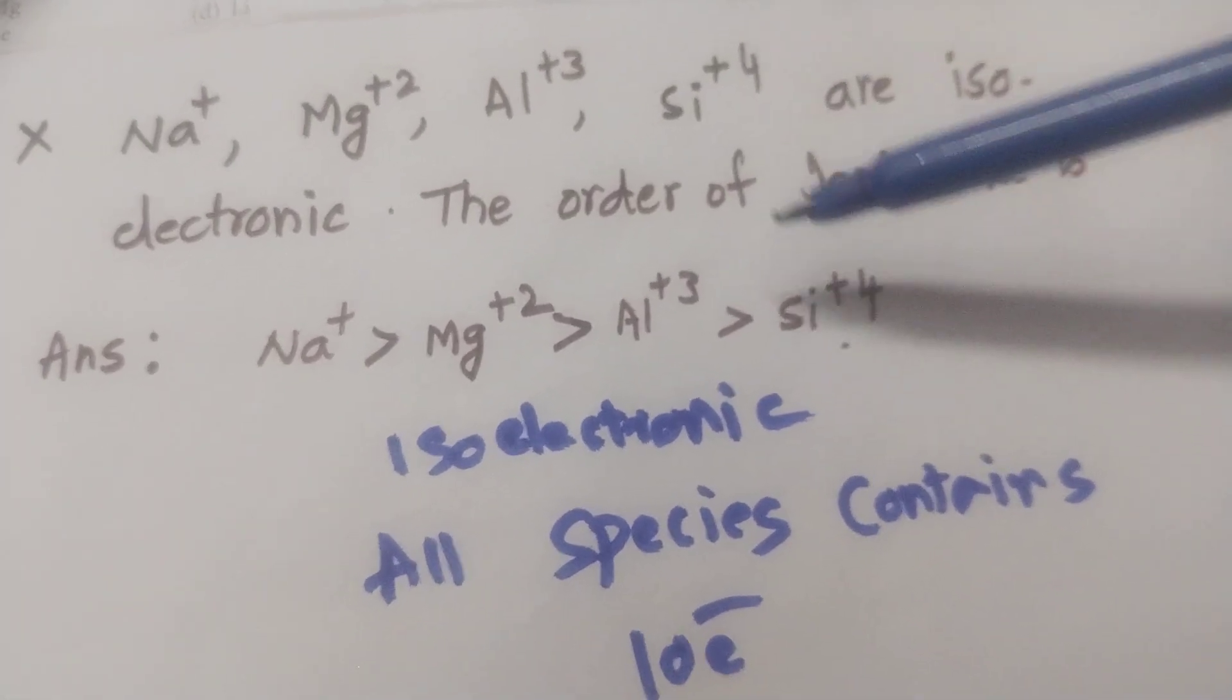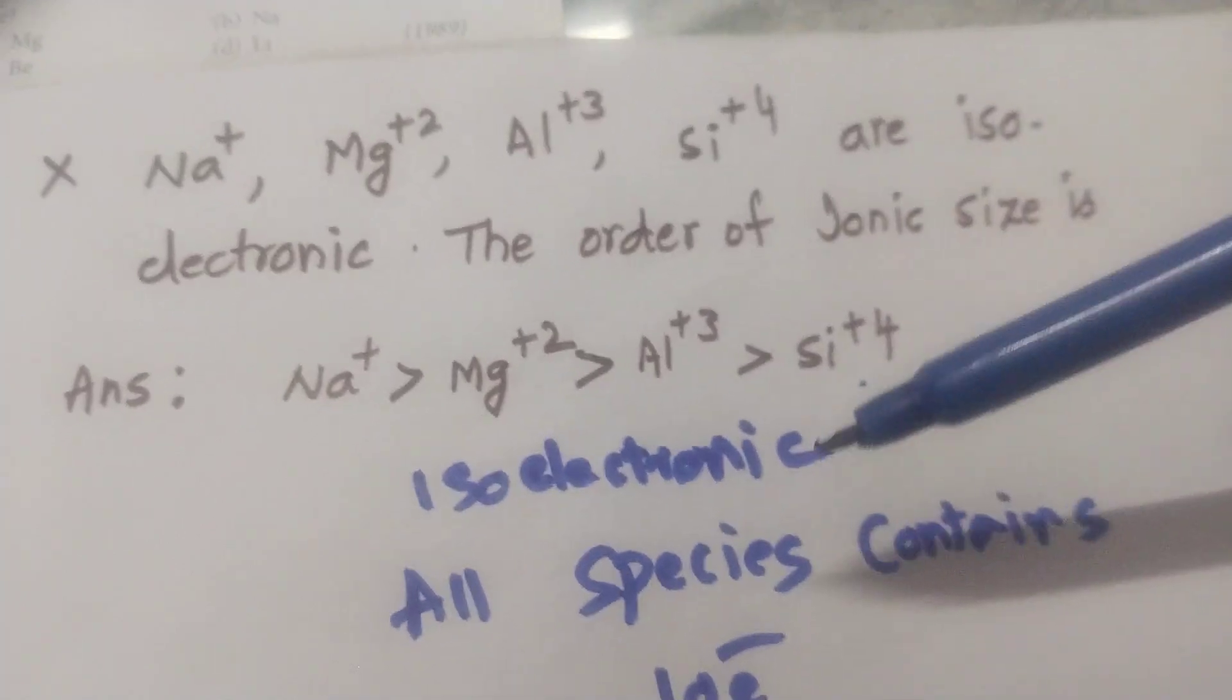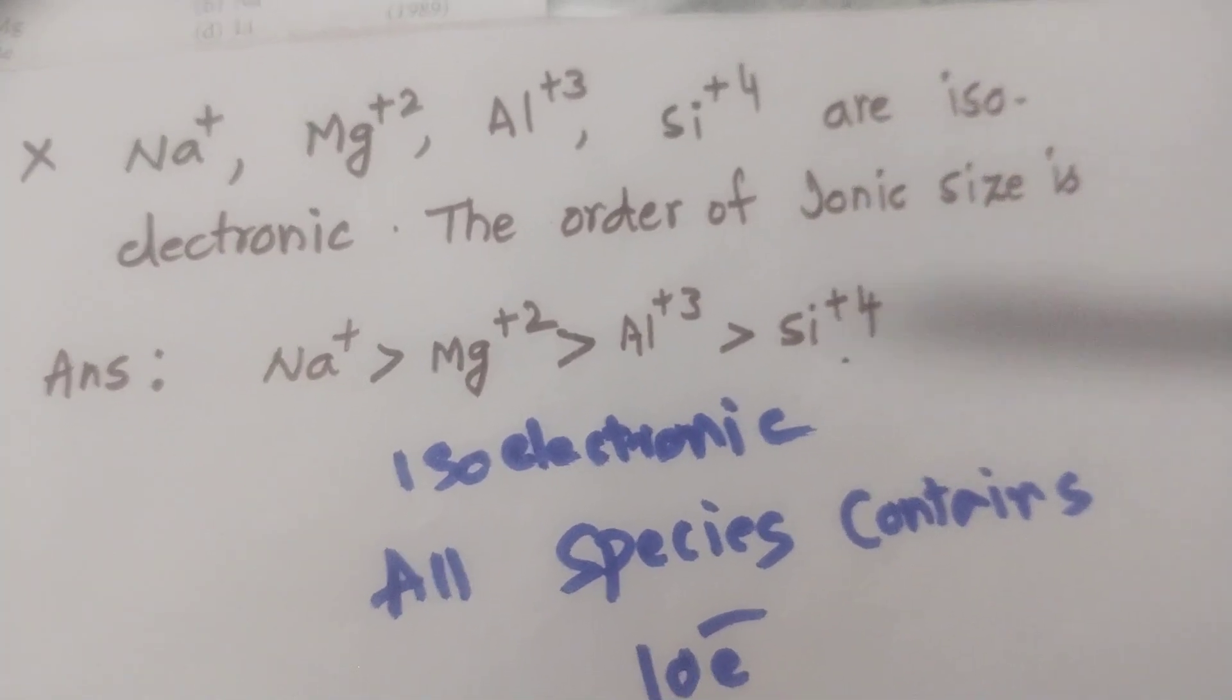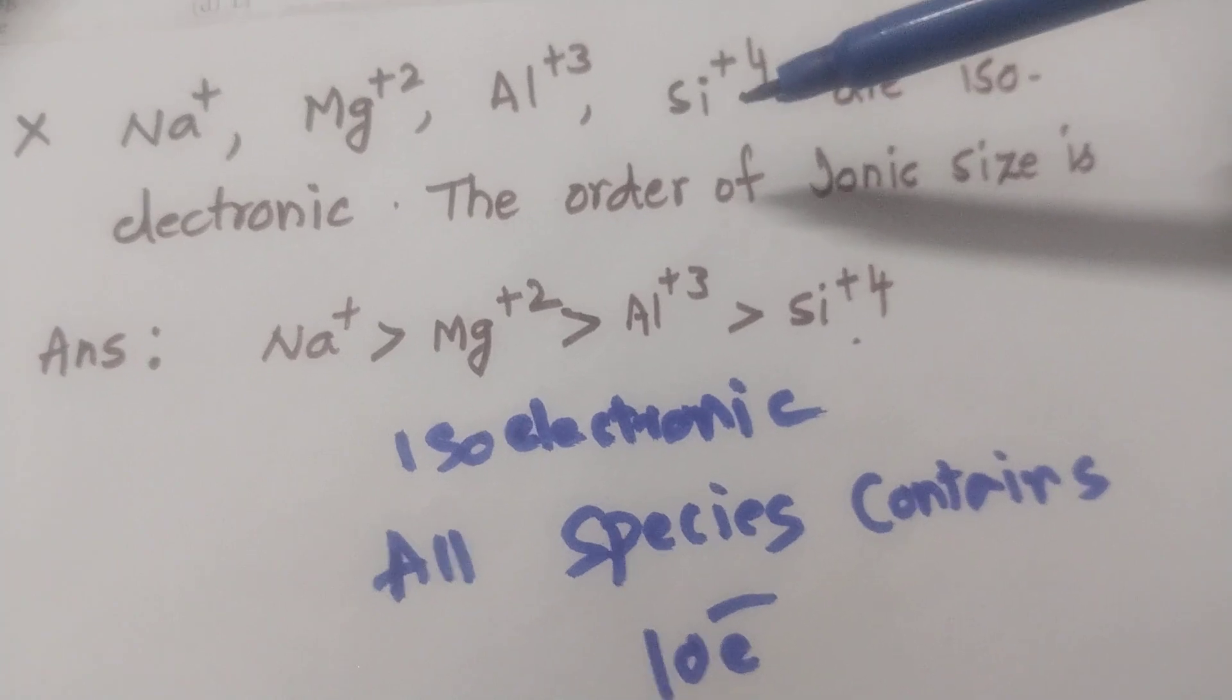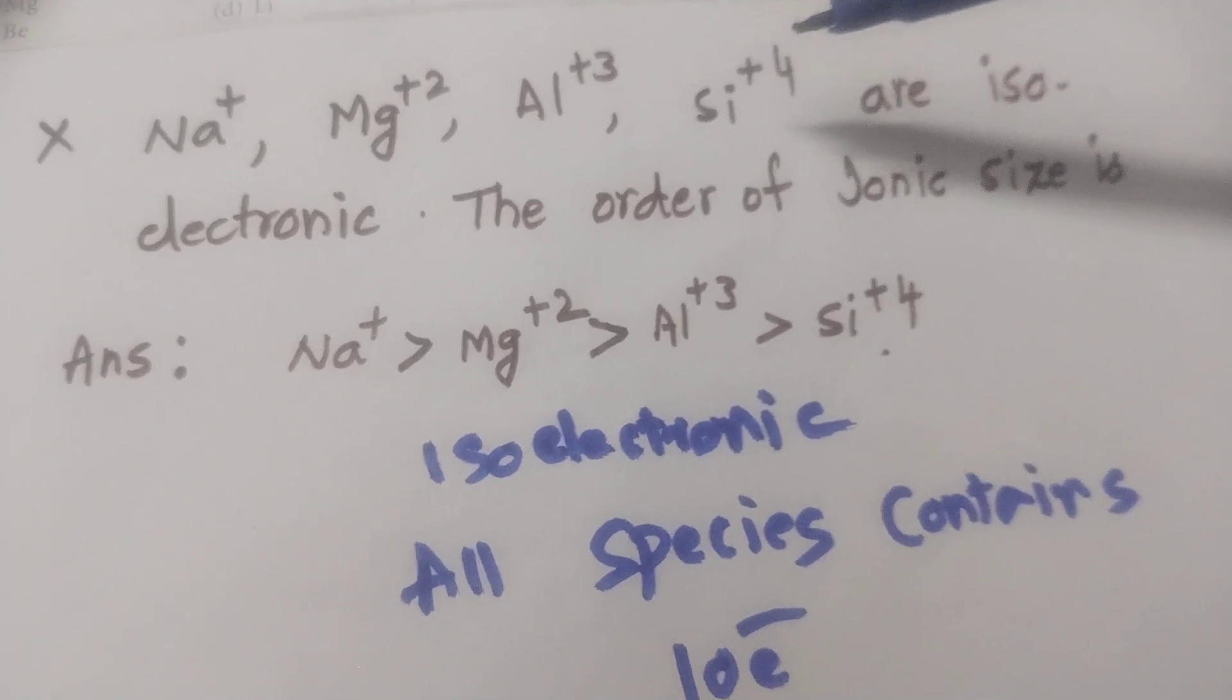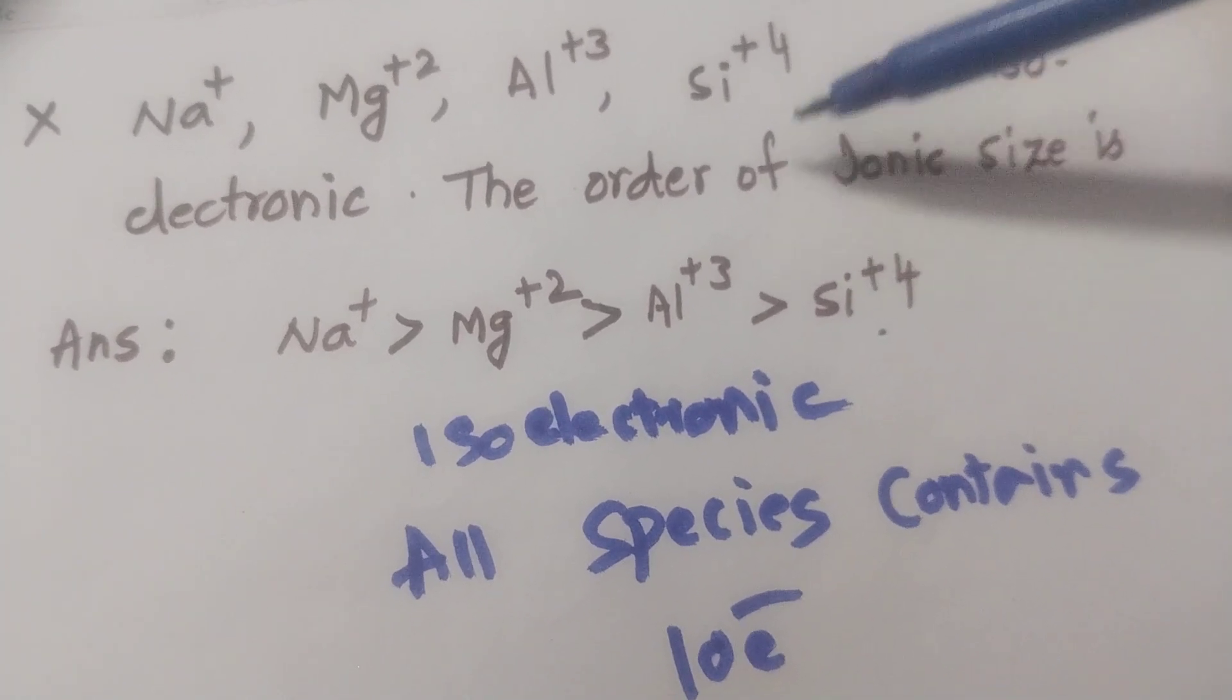The more the positive charge, the lesser the size. The trick is the more the positive charge, the lesser the size. Or you can say positive charge increases, size of the atom decreases.